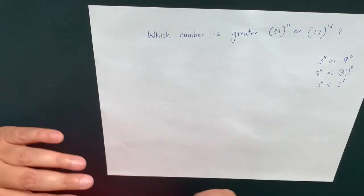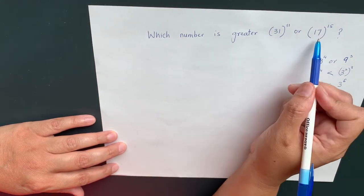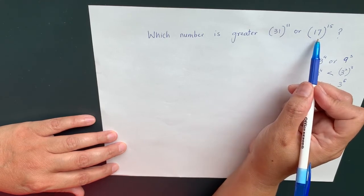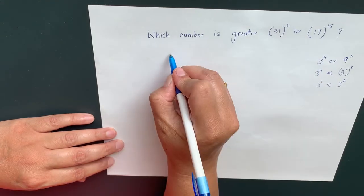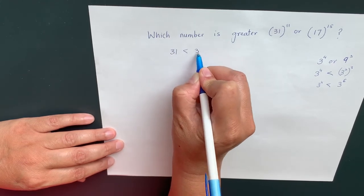So let's say we want to solve now this problem: which number is greater? We know that these two numbers 31 and 17 cannot be broken down into the same base. So we can say 31 is less than 32, right?